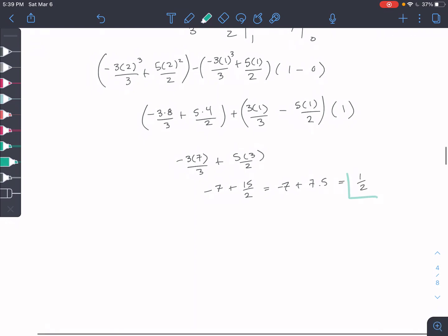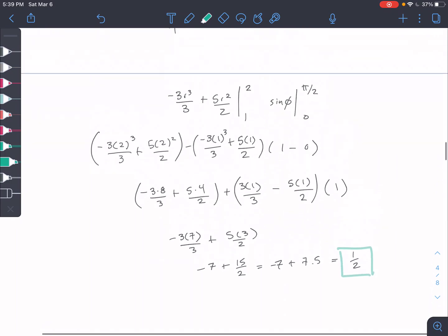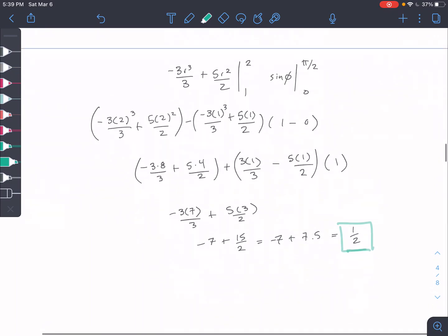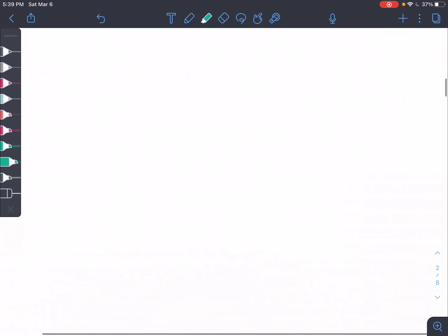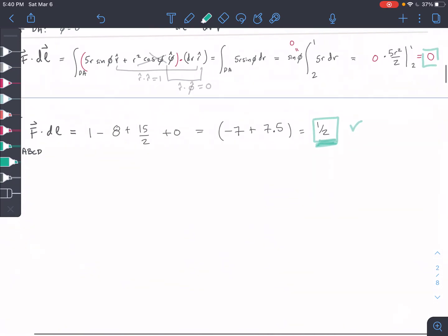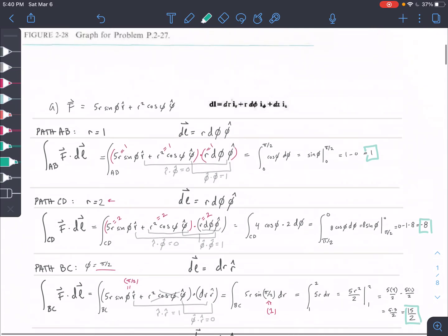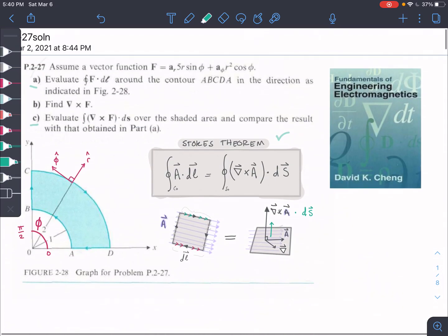So, all right. So our solution here, at the end, we found 1 half. And for part B, we also found 1 half. When we solved for the left-hand side of Stokes' theorem, we also got 1 half. So we found that part A was indeed equal to part C, and we were able to verify Stokes' theorem with this problem.